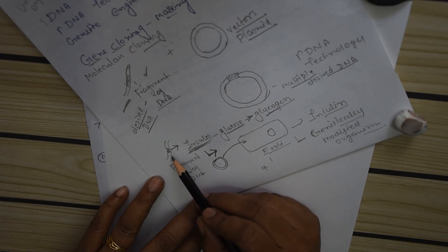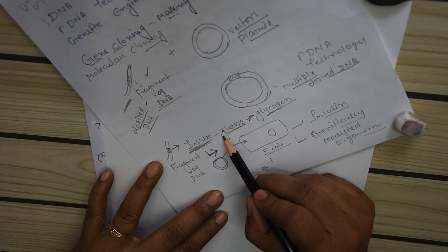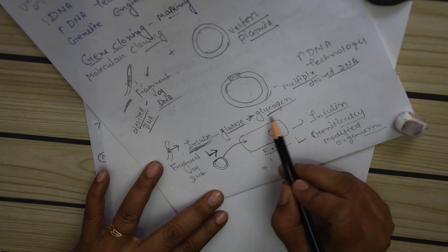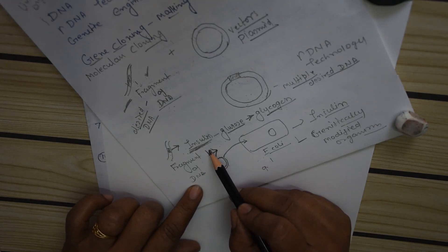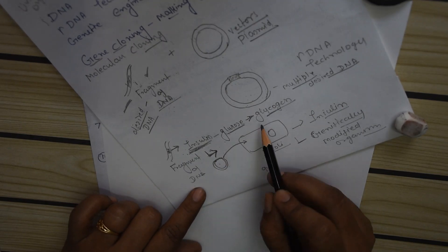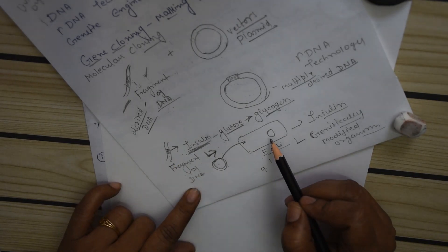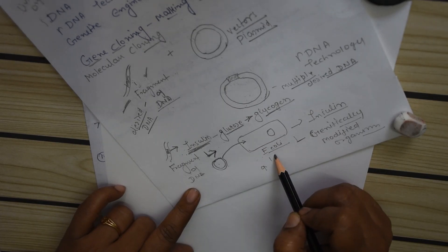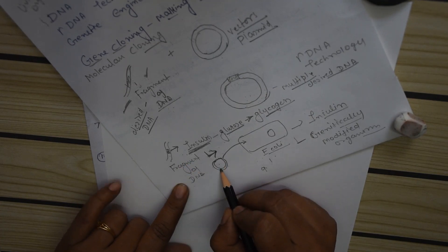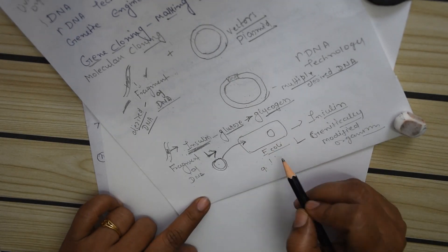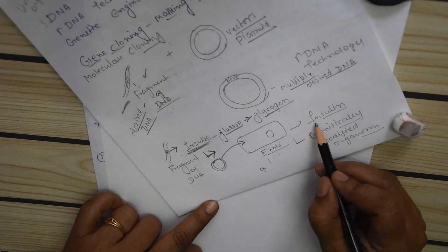Here is one more example. This is a fragment of DNA which has a gene that encodes for insulin. The most important function of insulin is that it converts glucose into glycogen, and apart from this it is used therapeutically in people who are suffering from diabetes. So if this fragment of DNA is introduced into E. coli, E. coli will start producing insulin. This fragment of DNA is linked with the competent vector and then it is introduced into E. coli, which then turns genetically modified and starts producing insulin.